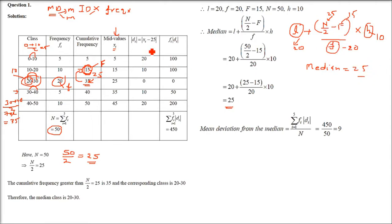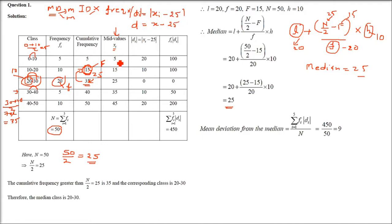Now that the median is 25, we compute Di = |Xi − 25| for each mid value. There are 5 data terms (i = 1 to 5), so we subtract 25 from each Xi: 5−25, 15−25, 25−25, 35−25, 45−25, and take the absolute (positive) value.